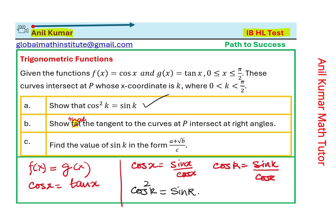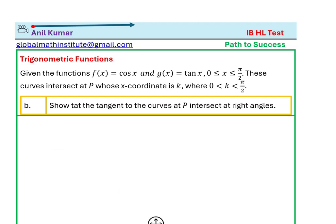So that is how you'll do the first part. Now we need to show that the tangent to the curves at P intersect at right angles. So tangents will be derivatives. f(x) is cos x, so the derivative will be -sin x. For g(x) which is tan x, derivative will be sec²x.